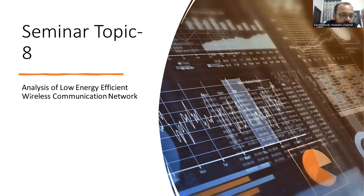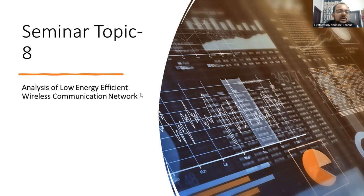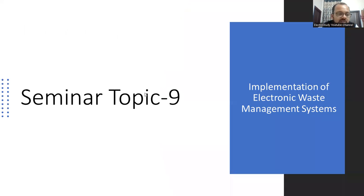Topic 8: Analysis of Low Efficient Wireless Communication Networks. There are different topologies available, so it is better to have a detailed review on the topology. Study any one topology and prepare a comparative analysis. If you are interested, you can also prepare a review paper. This is one of the useful topics especially for electronics students.